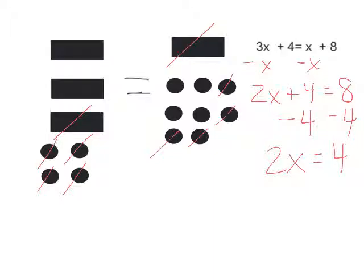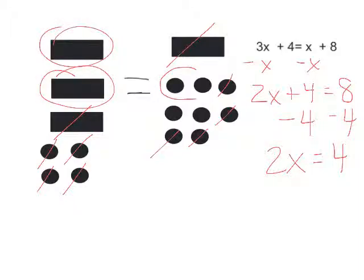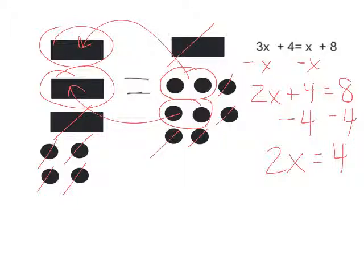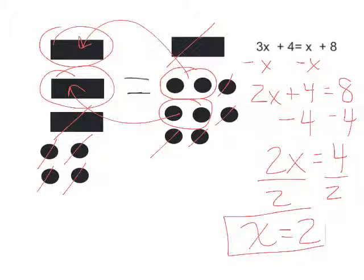Now to solve this, I have 2x's on the left and 4 circles on the right, which means I have to divide by 2. I divide these 4 circles into 2 separate parts because 2 go inside each x. So I divide both sides by 2, and that means there must be 2 in each x. So x equals 2.